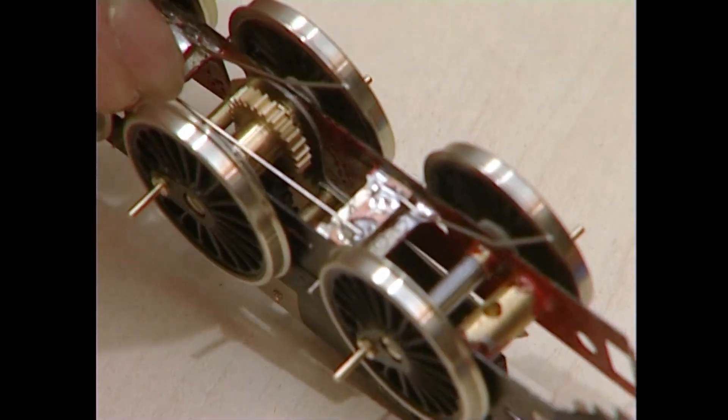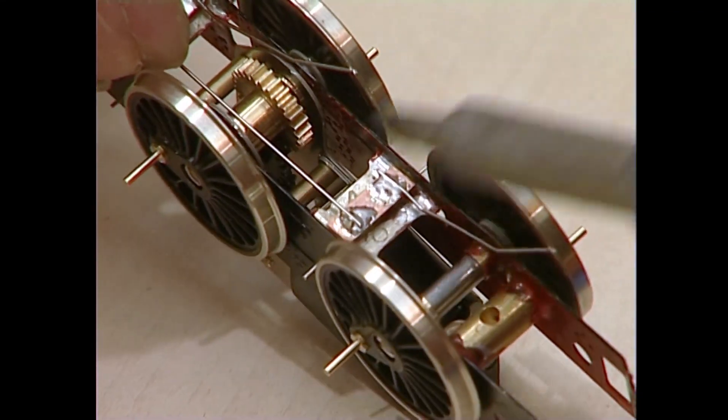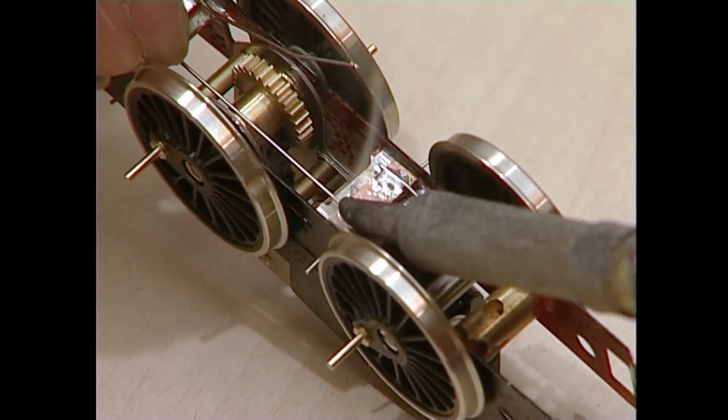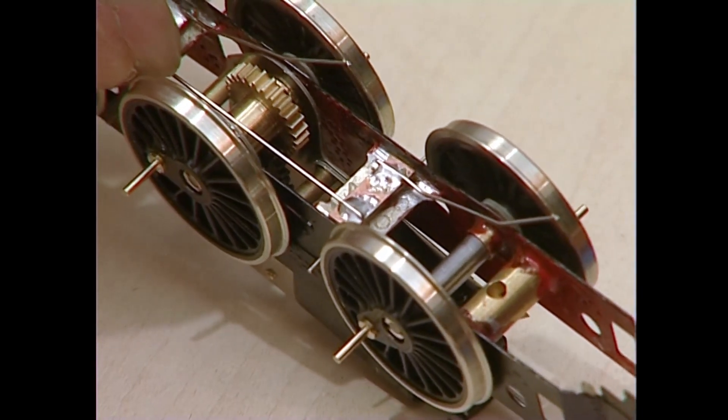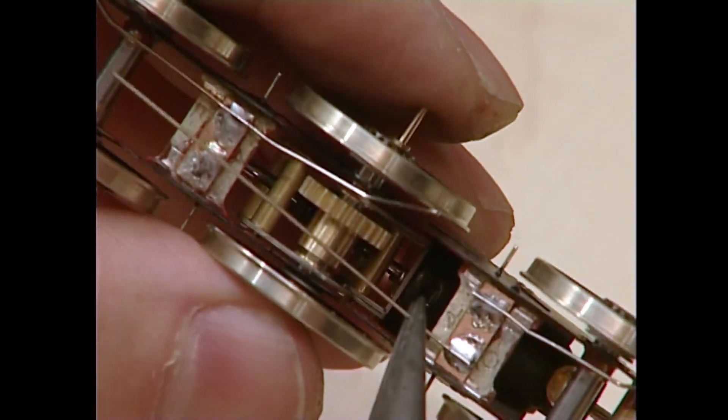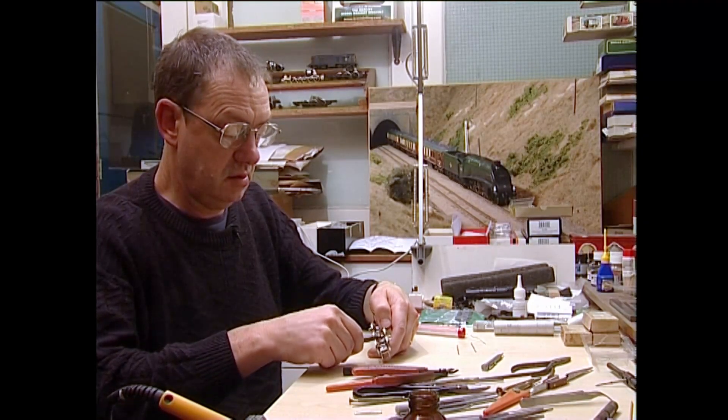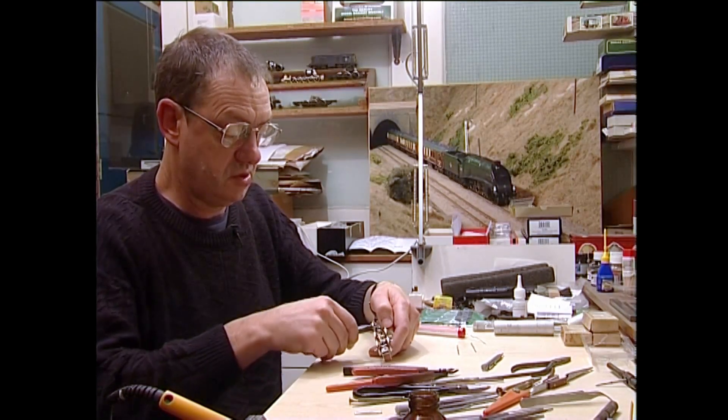I shall bend this once the first part is soldered in. Now whatever you do, don't dwell with the iron on the second one because your nicely adjusted pickup will merely fall off. So in quickly and out again. Now if you look closely there, that's very close to the edge of the gearbox. So just bend it up slightly out of the way.